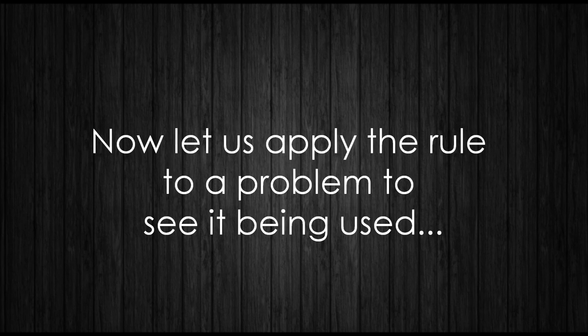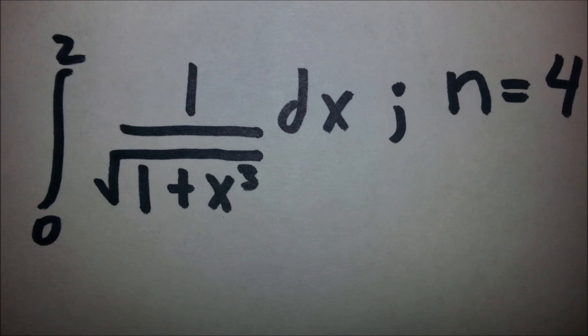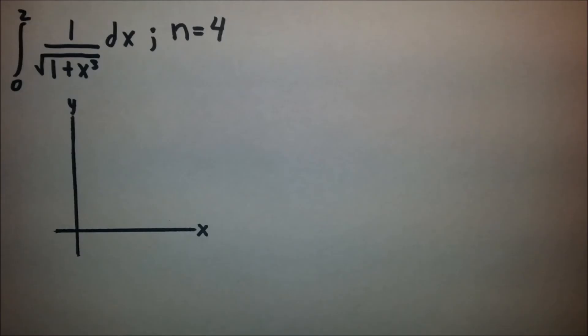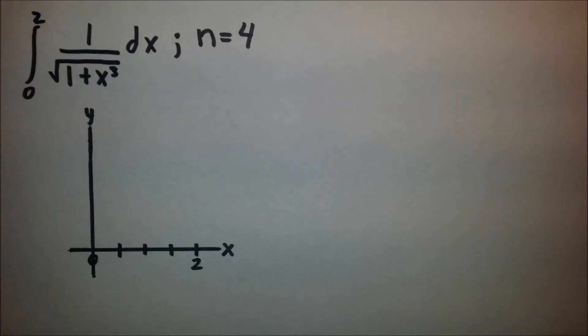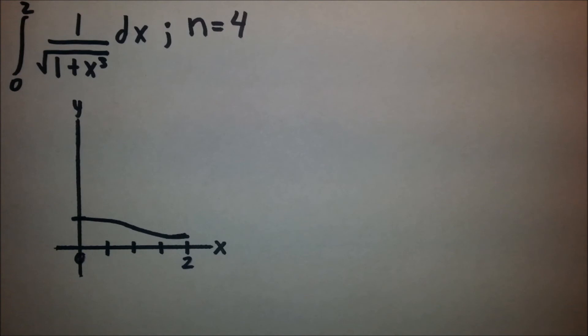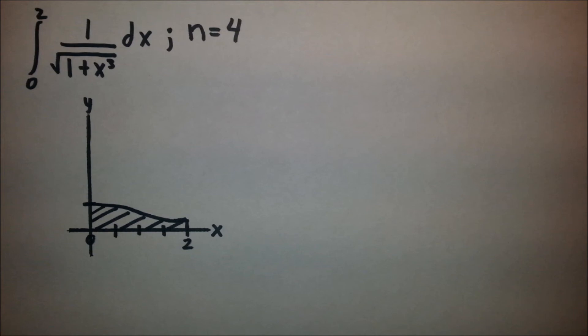Now, let us apply the rule to a problem to see it being used. Our problem is going to be approximating the integral from 0 to 2 of 1 over the square root of 1 plus x cubed dx, with n equals 4. So we begin by graphing 1 over the square root of 1 plus x cubed from 0 to 2. We wind up with this line segment. We are going to try to find the area underneath that line segment.